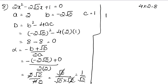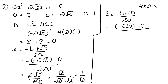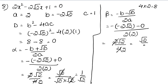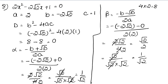Now let's find beta. Beta equals (minus B minus √D) upon 2A. Substituting: minus(minus 2√2) minus 0, upon 2 times 2. This gives 2√2 upon 4, which simplifies to 1/√2. So both roots are 1/√2.